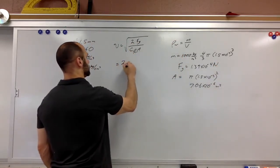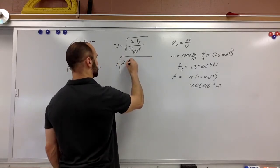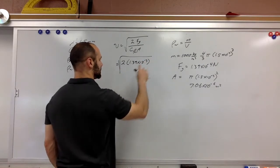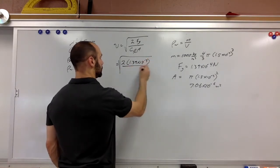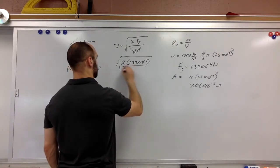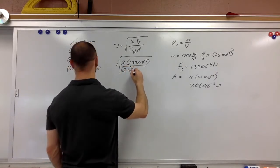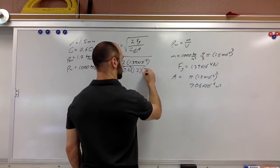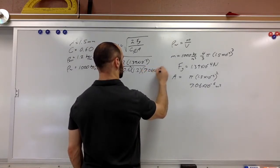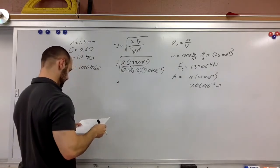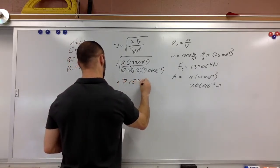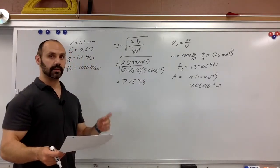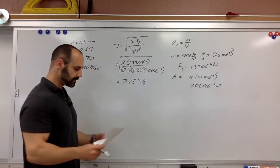So I plug these numbers in here and so I get the square root of 2 times 1.39 times 10 to the negative fourth over C which is 0.6 times rho rho of air which is 1.2 and then A which is 7.06 times 10 to the negative sixth. When you put all that in we end up with 7.15 meters per second. So it's really not moving all that fast but let's see what it would be like if there was no air resistance.